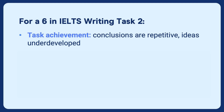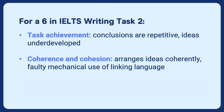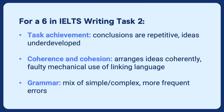Looking more carefully at the marking criteria, for a six in task achievement they'll say things like conclusions are repetitive or ideas inadequately developed. For coherence, it says arranges ideas coherently, but there may be faulty or mechanical use of linking words. And finally, there's a mix of simple and complex sentences but with more frequent errors.